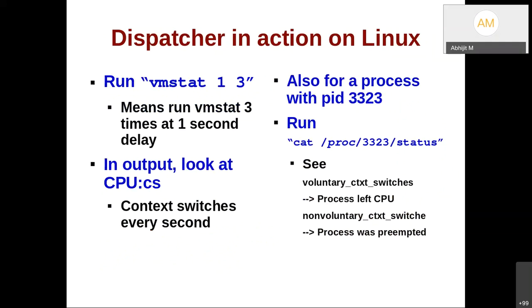To see the dispatcher in action on Linux you can run vmstat. vmstat 1 3 means show output three times at one-second delay. In that output you can look at cpu:cs — the context switches that happened every second. Also, in the /proc folder for a particular process, you can see voluntary context switches and non-voluntary context switches. Voluntary means the process let go of the CPU (condition 1). Non-voluntary means the process was actually preempted (conditions 2 or 3).